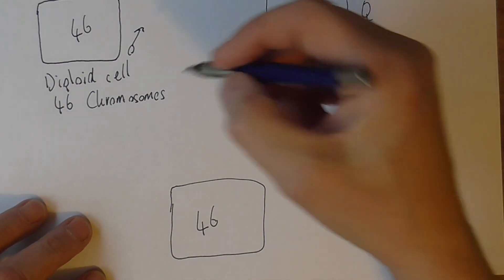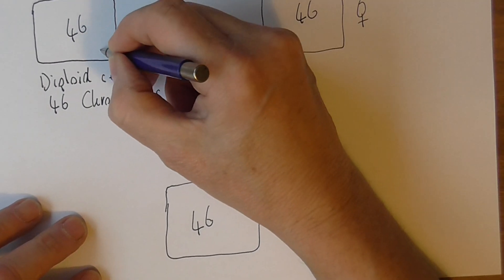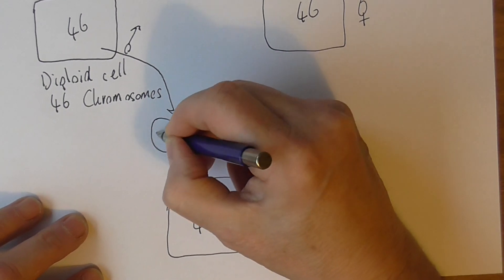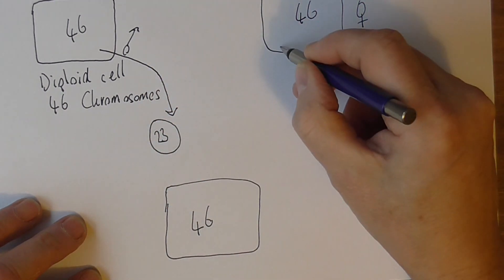So what we need to do is have a reduction cell division where we produce a cell of 23 and another cell of 23.